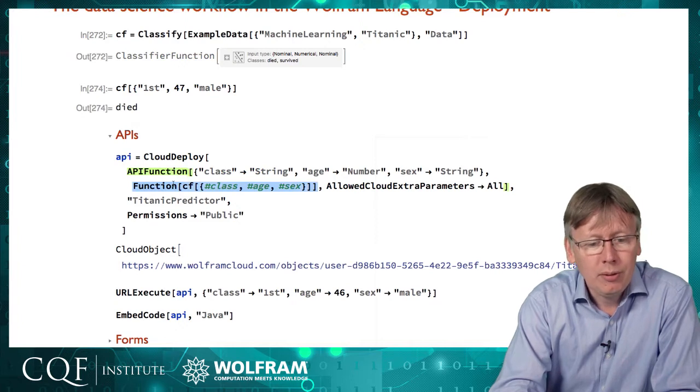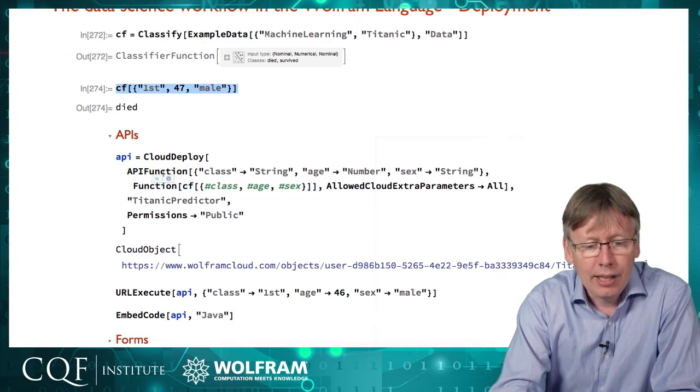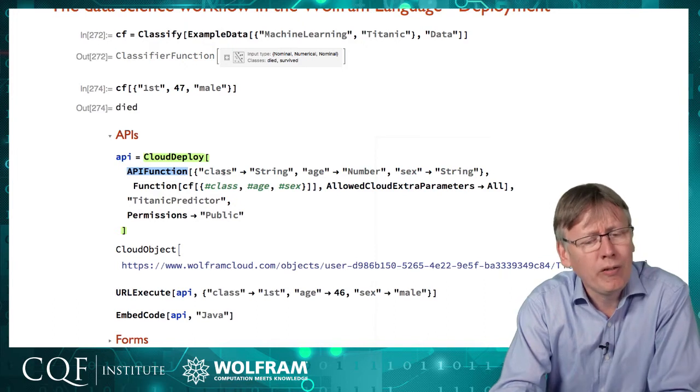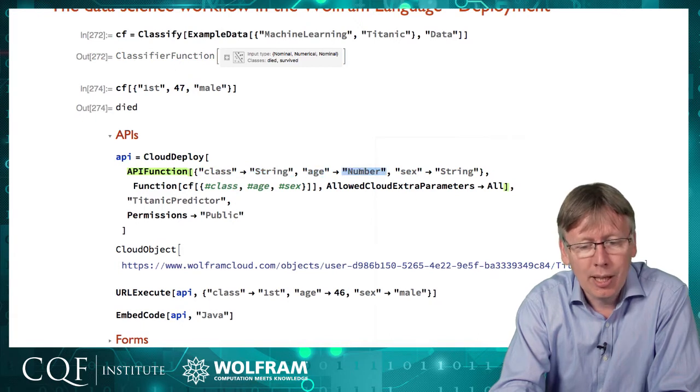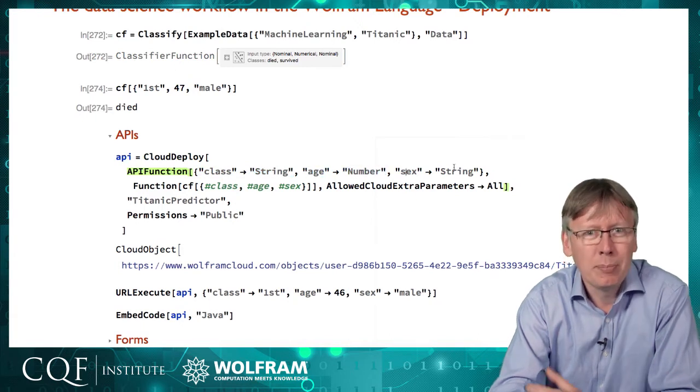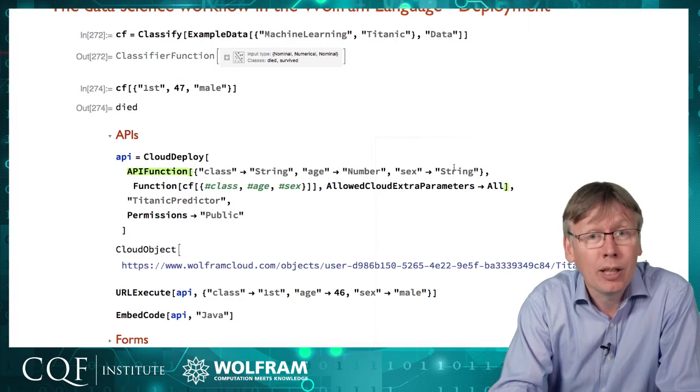So here I've got the function, which is just to call my classifier. So this is the classifier I just built. And then I'm going to set up an API function that, and I have to give it a little bit of information about what to expect, that it's going to get three arguments, a class which is going to be a string, an age which is going to be a number, and sex which is going to be a string. This is because the web's not got any kind of typing information to be able to pass that stuff across.